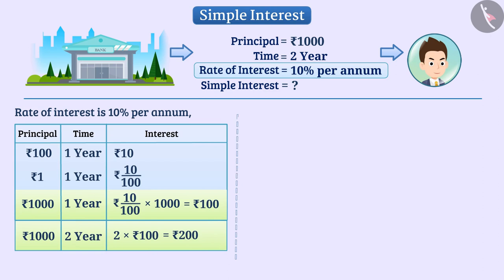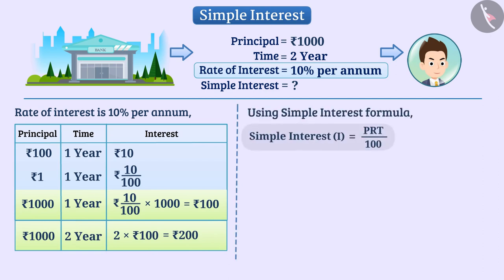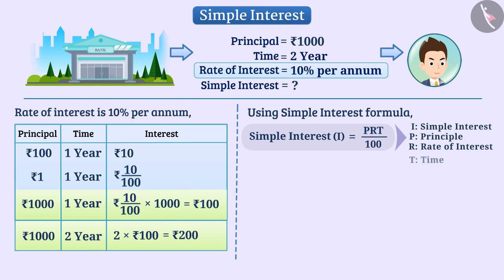We can also calculate simple interest using the formula: I = (P × R × T) / 100, where I is simple interest, P is principal, R is rate of interest, and T is time. In this way, I = 1000 × 10 / 100 × 2, which is equal to Rs. 200.